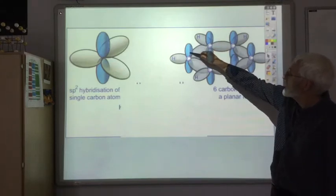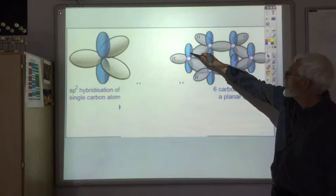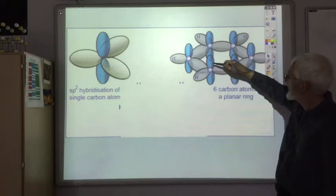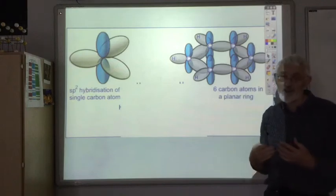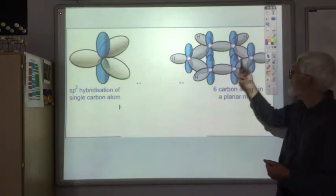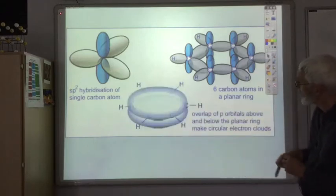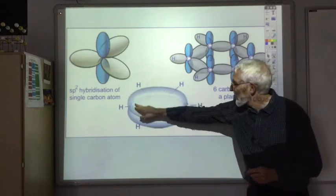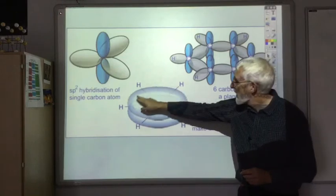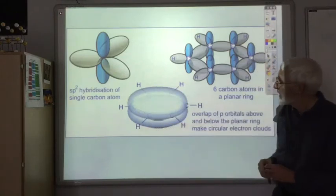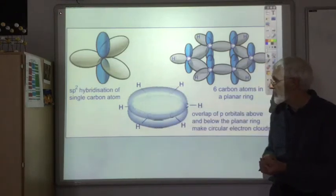But the electron in this p orbital is as likely to form a pi bond with this carbon as it is with this carbon. And in fact, it does both, as do them all. This results in a ring above and below the ring of carbon atoms.